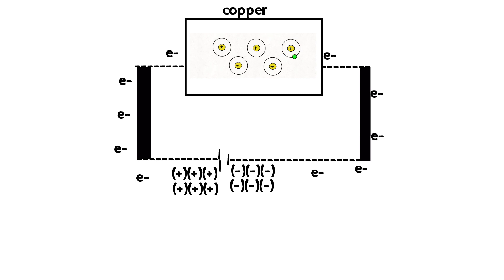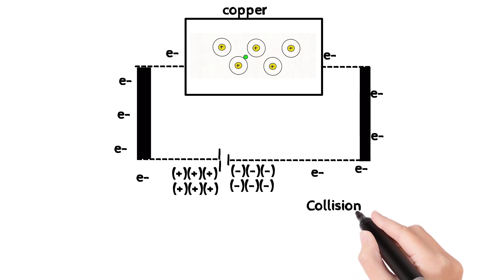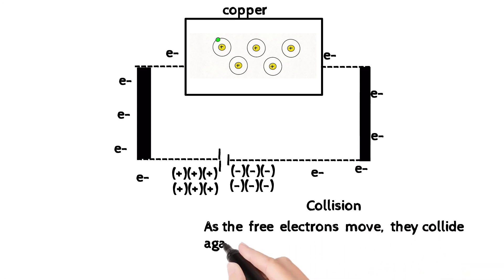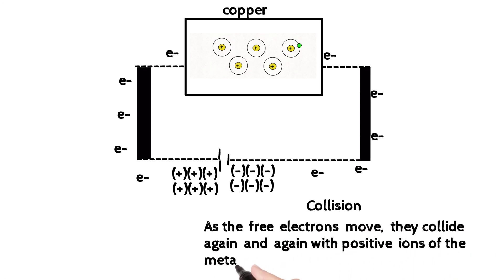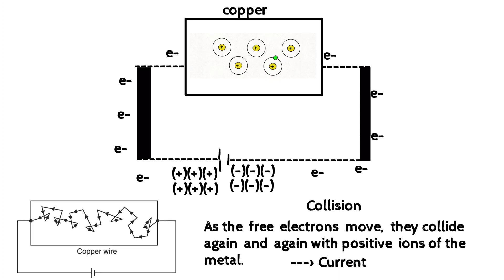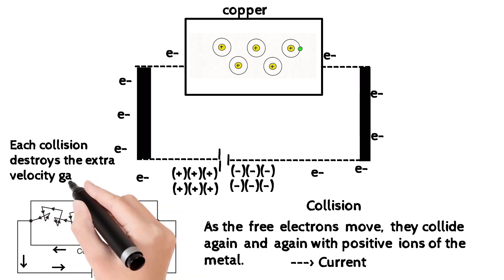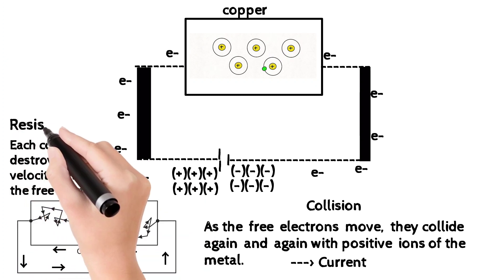Due to the applied potential and room temperature, the positive terminal continuously attracts free electrons. As free electrons move, they collide with positively charged atoms and neutralize them. This flow of free electrons from the negative terminal to the positive terminal is called current. The opposition to electron movement caused by these collisions is called resistance.